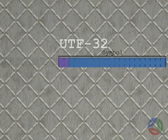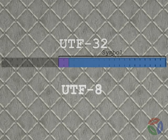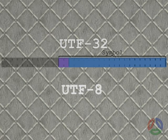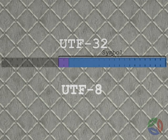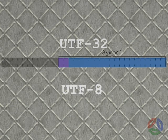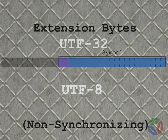Let's now look at how Unicode flat characters, known as UTF-32, are encoded into UTF-8 byte streams. Each UTF-32 code point requires a sequence of 1 to 4 bytes to encode its value. The first byte in each sequence is referred to here as the start byte. These always have unique prefix signatures for the number of bytes in their sequences. Additional bytes, if present, are called extension bytes, and these always share the same 2-bit prefix signature.